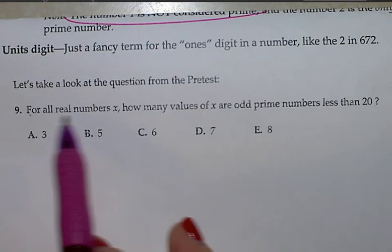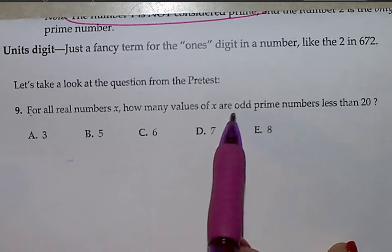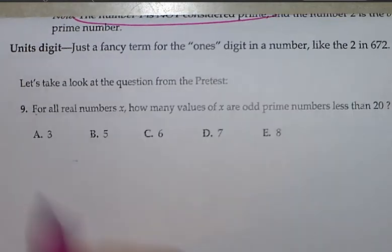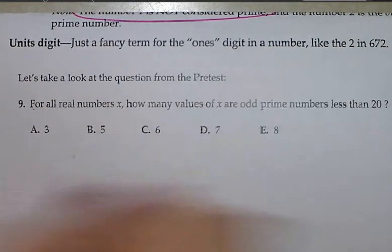For all real numbers x, how many values of x are odd prime numbers less than 20? Okay, so I'm going to write all the numbers right now that are less than 20, integers that are less than 20.